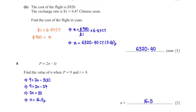P equals 2n minus 3t. Find the value of n when p equals 9 and t equals 8. When we plug in p equals 9 and t equals 8 into the given equation, 3 times 8 is 24. When we group like terms, we have 2n equals 33. When we divide both sides by 2, we get n equals 16.5.